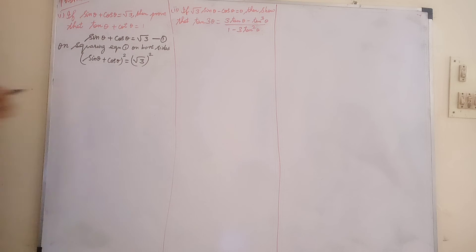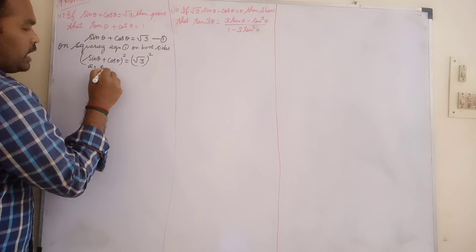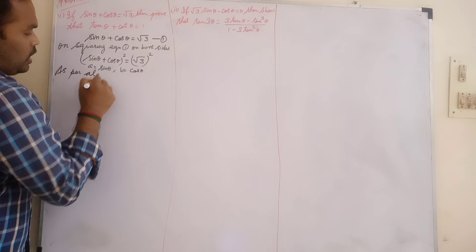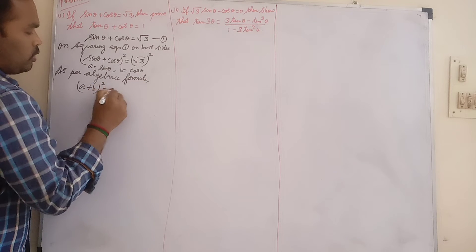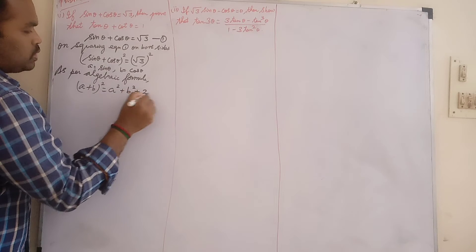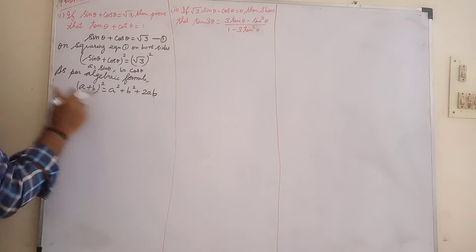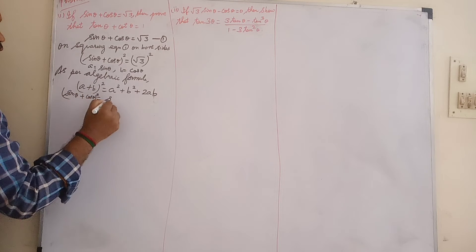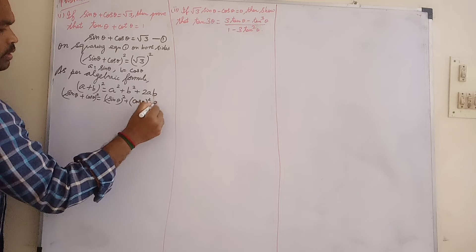sin θ + cos θ whole square is in the form of (a + b) whole square, where a = sin θ and b = cos θ. As per the algebraic formula, (a + b)² = a² + b² + 2ab. So sin θ + cos θ whole square equals sin²θ + cos²θ + 2·sin θ·cos θ.